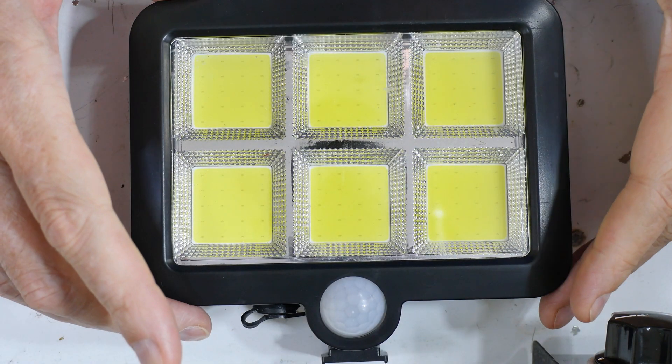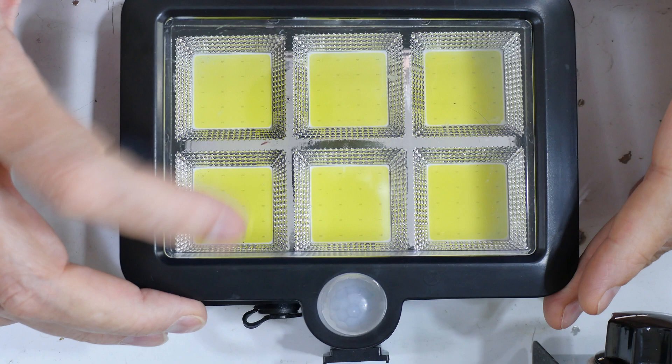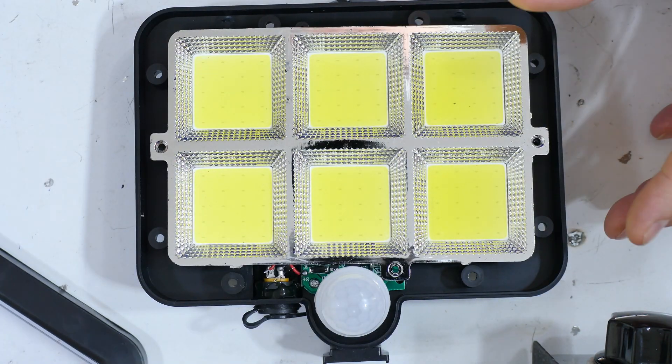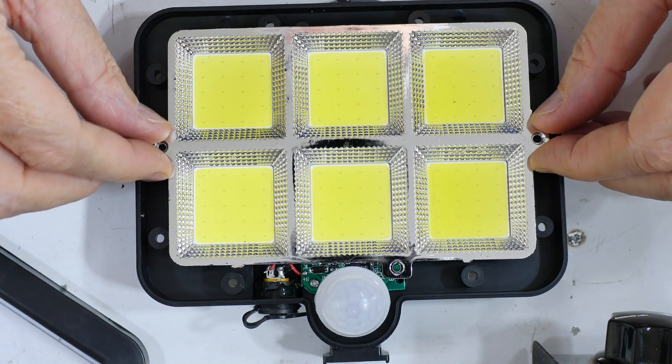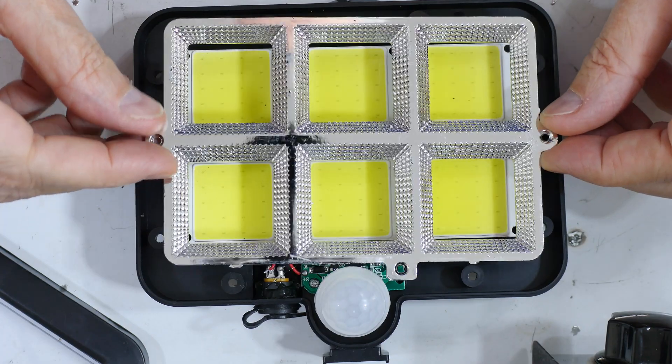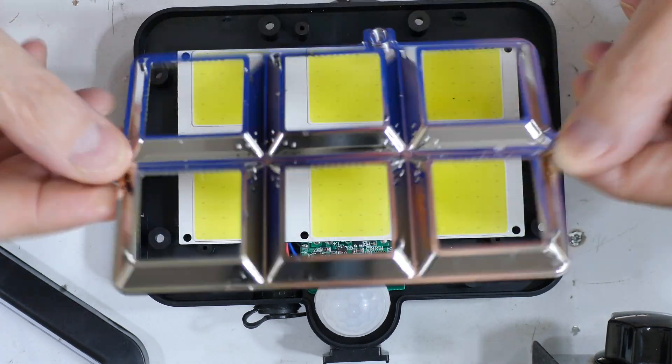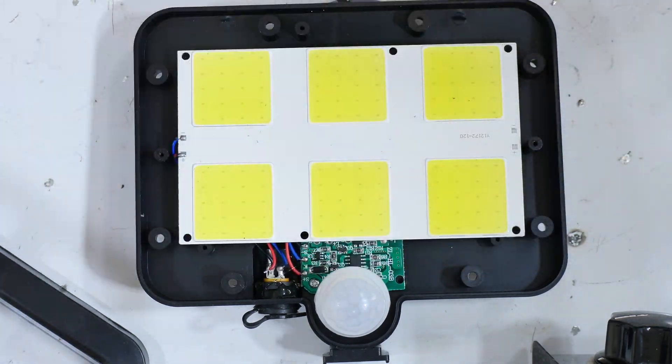I've already taken the screws out, so I'll remove the front cover with the glass in it. This next piece is just a reflector, just a piece of shiny plastic. Nothing special about that.